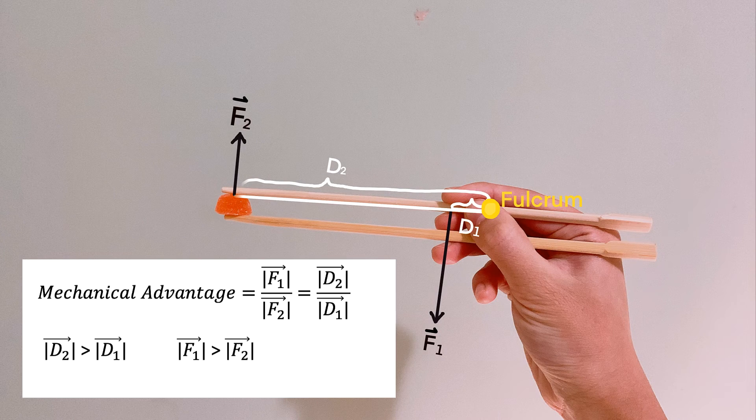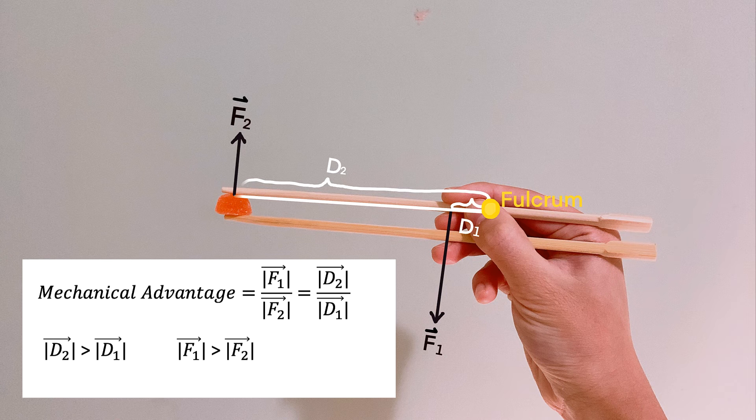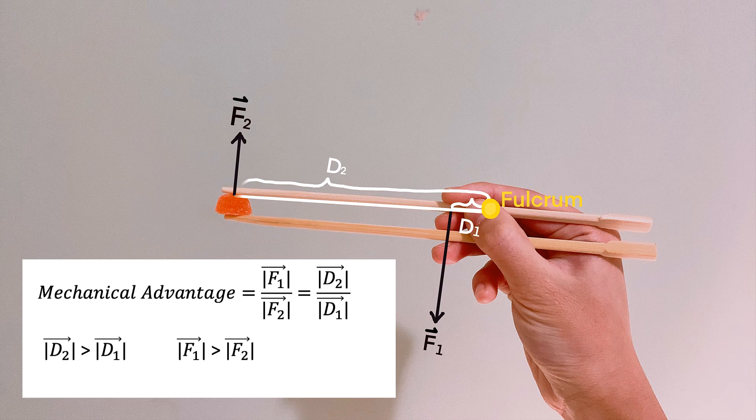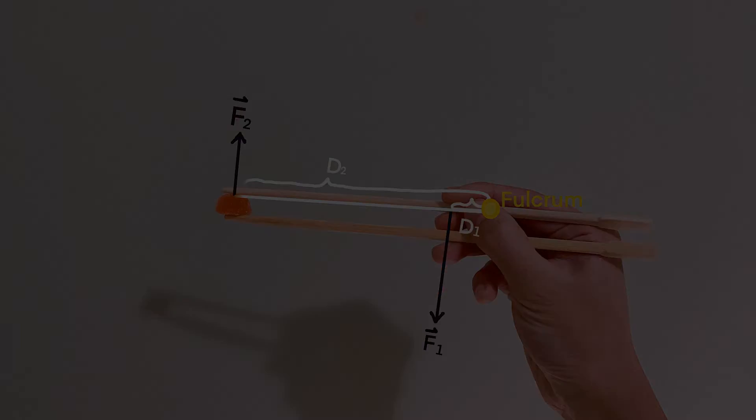In this case, we require a machine with a shorter distance from the force to fulcrum, which results in a larger force applied.